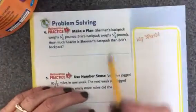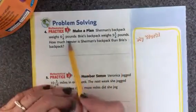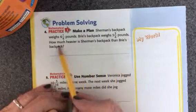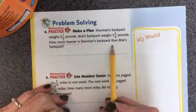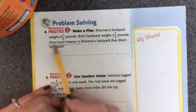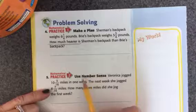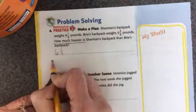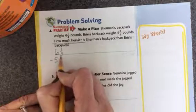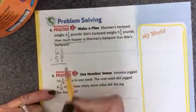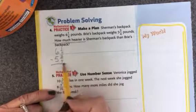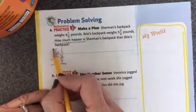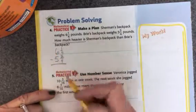Let's look at the back. Here we have Sherman's backpack weighs 6 and 1 4th pounds. Bree's backpack weighs 5 and 3 4ths pounds. How much heavier is Sherman's backpack than Bree's backpack? How much heavier are key words that tell me I need to subtract. So I'll write 6 and 1 4th. And I'll subtract 5 and 3 4ths. And I'll go ahead and figure out the answer. Now I can see that we already have a common denominator. So I can just start by going 1 minus 3. Which I can't do, so I'll need to borrow and then continue on.